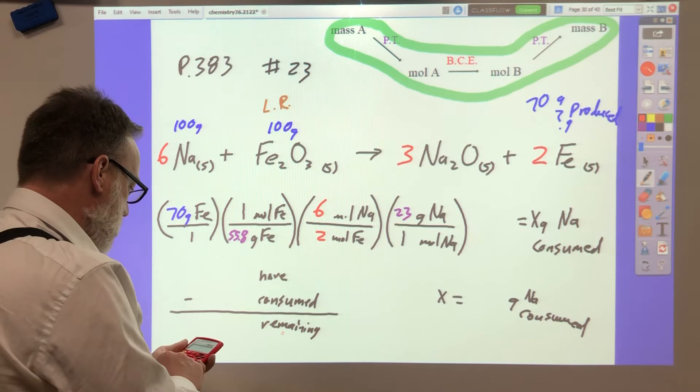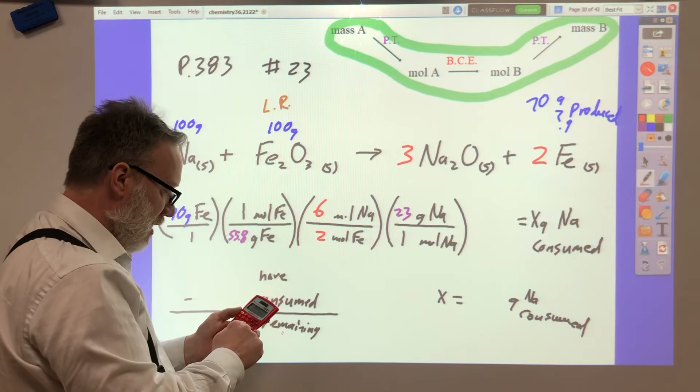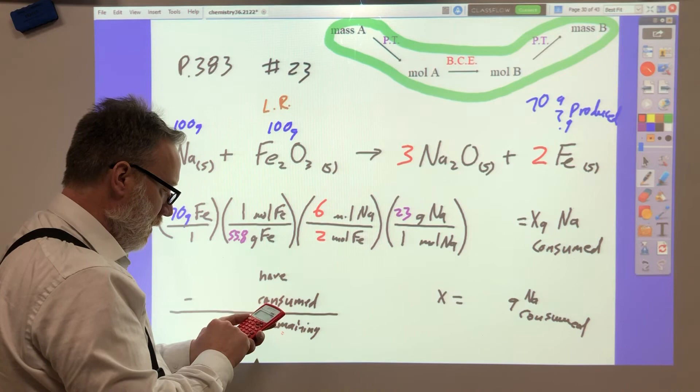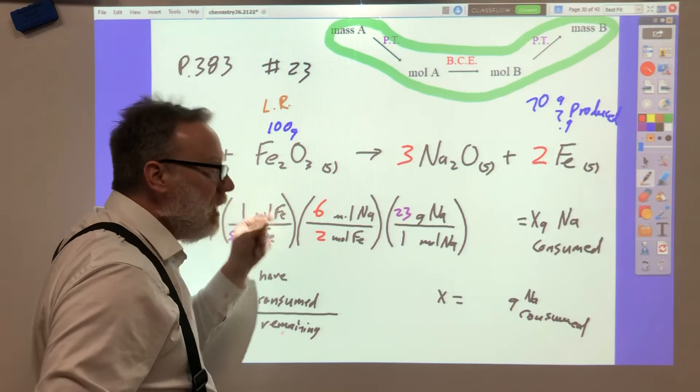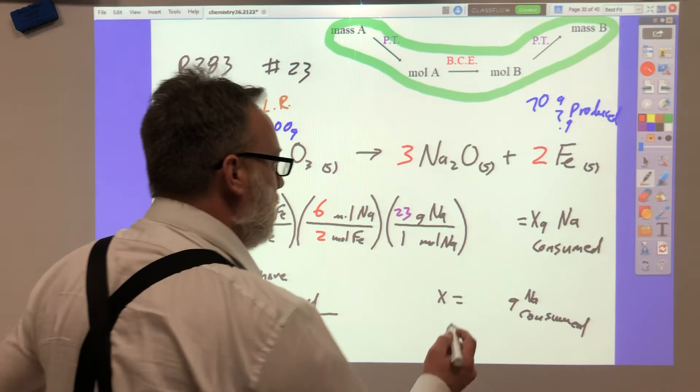So multiply the tops. Okay, 70 times 6 should be 420 times 23. Okay. Then I'm going to divide by 55.8 equals, and I'm also going to divide by 2. Why don't you multiply this? Well, if you multiply the tops, write it down, and then multiply the bottoms, and then write it down, and then divide. And that's the way I would suggest you do it. I didn't want to have to take the extra step. Okay. It just comes out to 86.6 grams is what I get consumed right here.